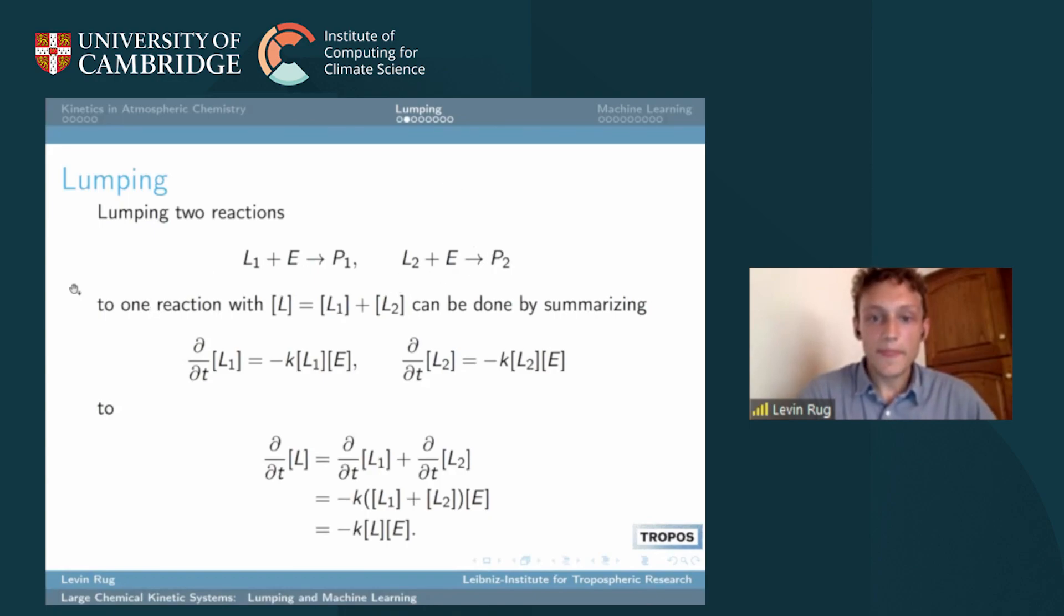If we are not interested in the concentration of A1 particularly, we can create a new species named L which is just the sum of these two species L1 and L2. The equations turn out to be summarizable so we only have to consider the concentration of L, and then we can delete one equation because we only need the equation for L, not the equations for L1 and L2.